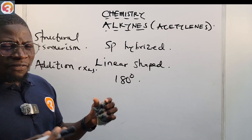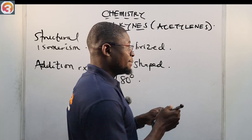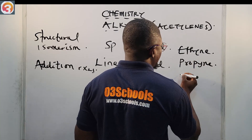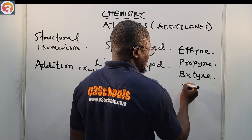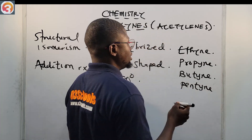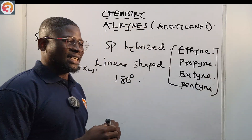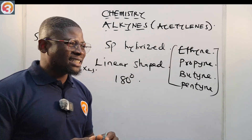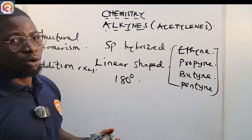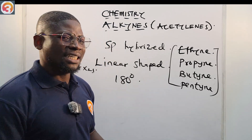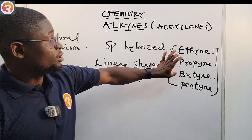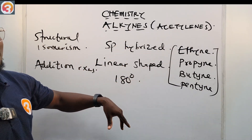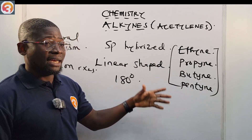The first four members of the alkynes are: ethyne, propyne, butyne, and pentyne. These first four members are gases. The next nine members are liquids. The higher alkynes are solids. Please take note of that.